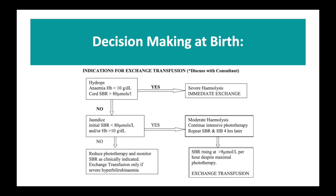For decision making at birth: if the initial cord bloods show a haemoglobin less than 10 or a bilirubin above 80, it's probably reasonable to assume you're going to need to proceed with an immediate exchange transfusion, as there's evidence of very severe haemolysis. If neither threshold is met, it's reasonable to start aggressive phototherapy and monitor the SBR within a few hours. If the bilirubin is found to be rising at more than 8 micromoles per litre per hour despite maximal phototherapy, it's reasonable to proceed with exchange. If it's not rising that quickly, continue phototherapy and monitoring — you only need exchange if you get into the zone of severe hyperbilirubinemia.